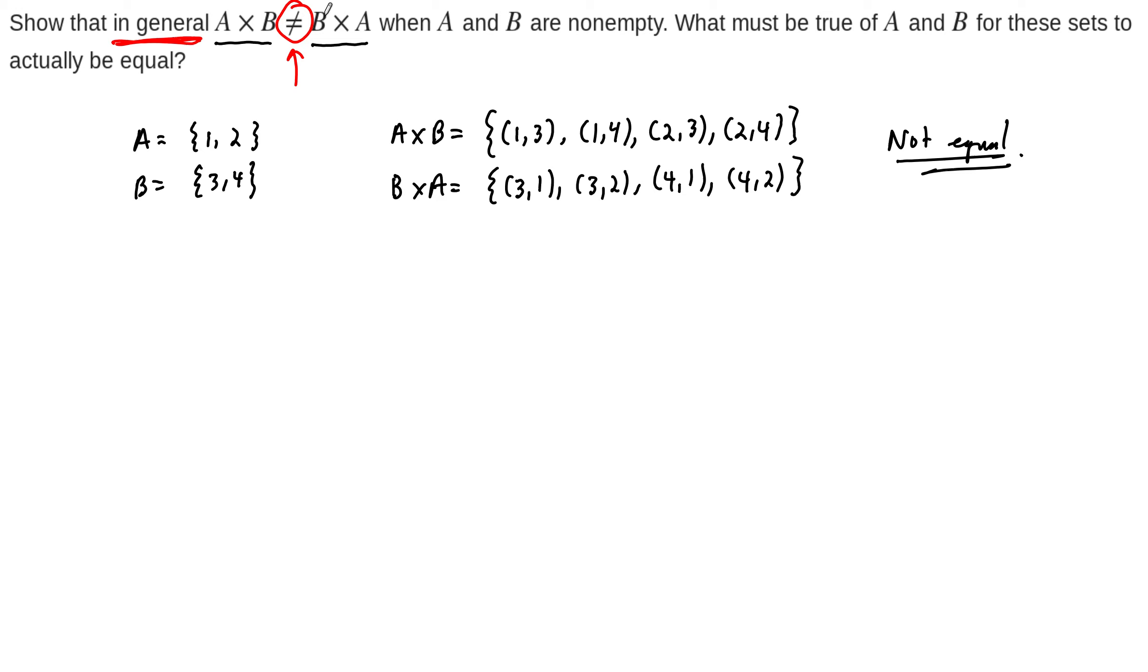But then the question asks, what must be true of A and B if these sets are actually going to be equal to each other? So can you think of some criteria that we can set on these two sets, A and B, to ensure that the cross products are equal to each other?